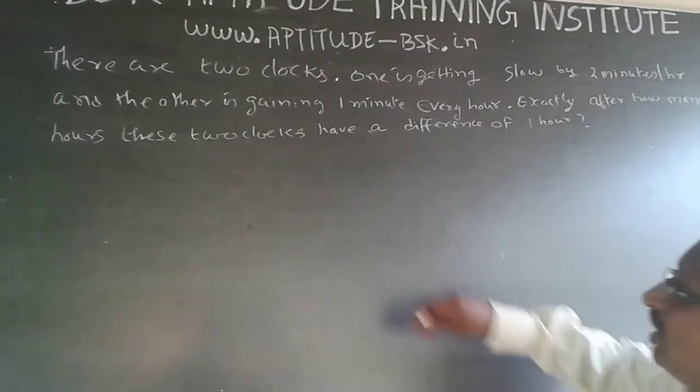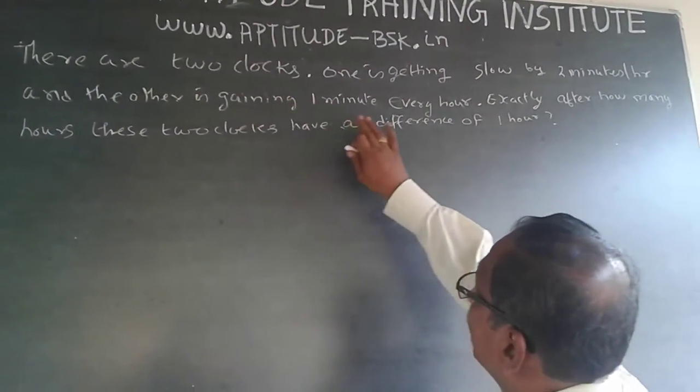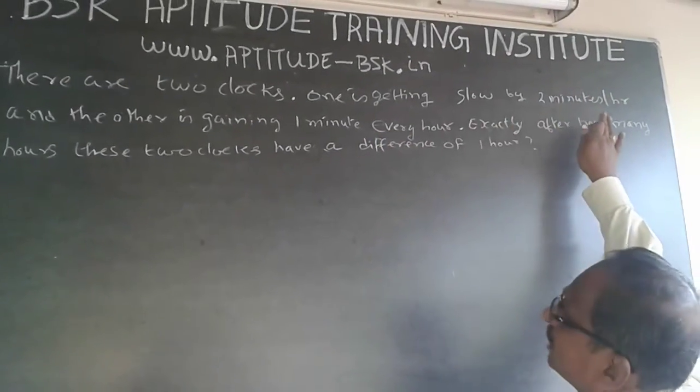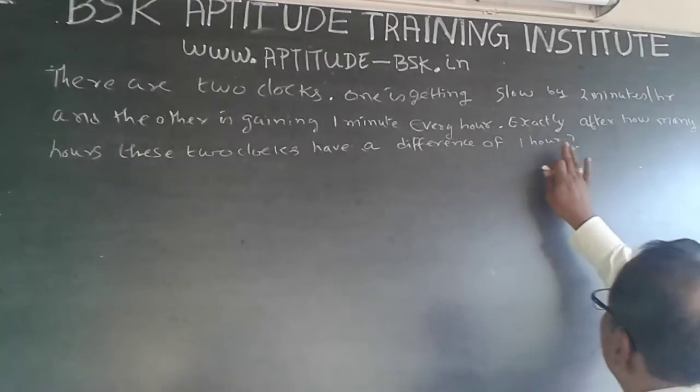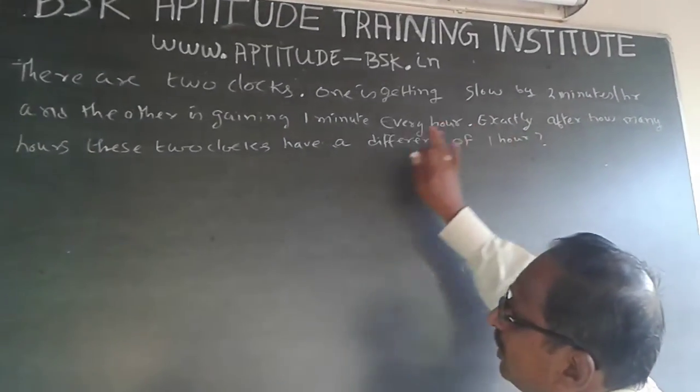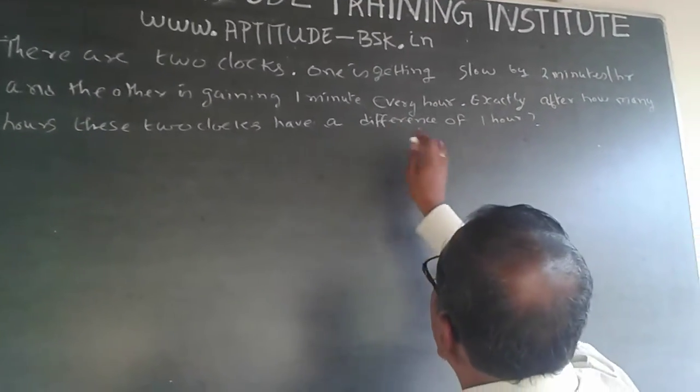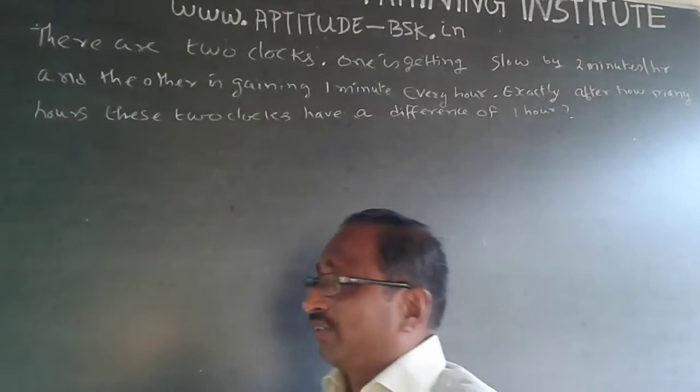The question is, there are two clocks, one is getting slow by two minutes every hour and the other is gaining one minute every hour. Exactly after how many hours, these two clocks have a difference of one hour.